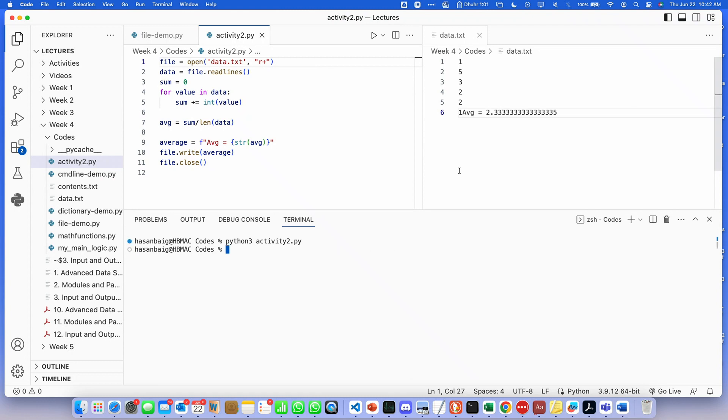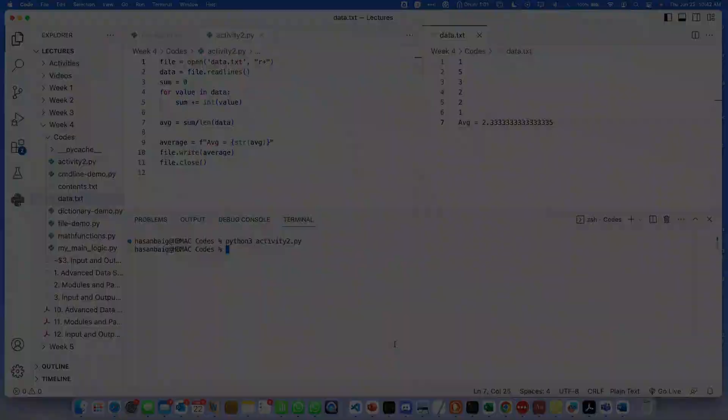this... sorry, it actually appends it like this. So this was supposed to be the file, and there you go: 'average equals 2.3335' as a string is added at the end of the file.